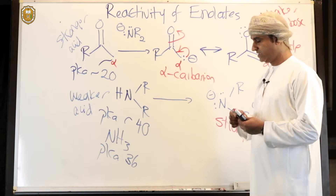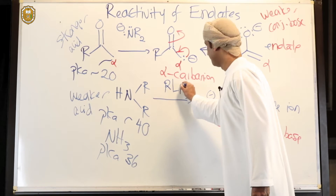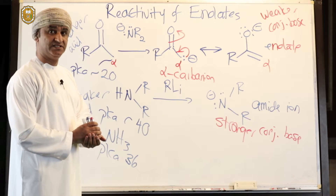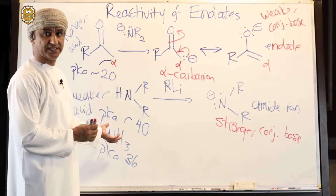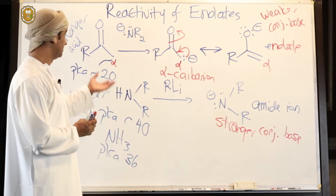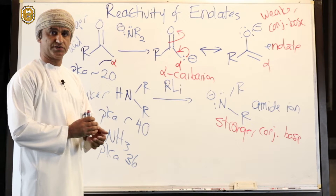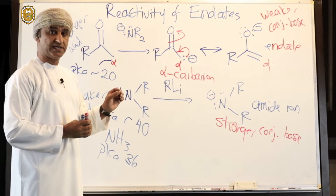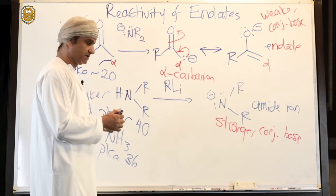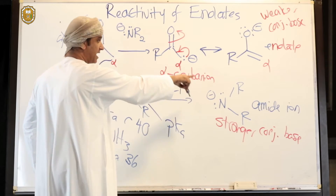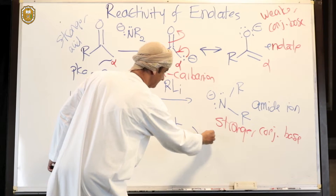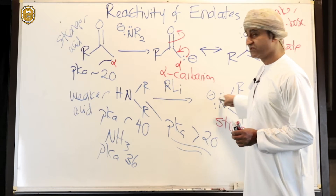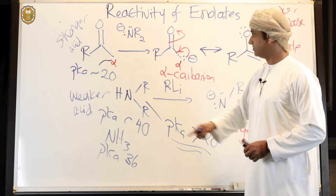Amide ions can be made from amines by reacting with very strong bases, typically organolithiums (RLi). Organolithiums can deprotonate amines to make the corresponding amides. The conjugate base of ammonia, NH₂⁻, is also sufficient to deprotonate ketones at the alpha position. The requirement is that the base must come from an acid whose pKa is higher than 20.